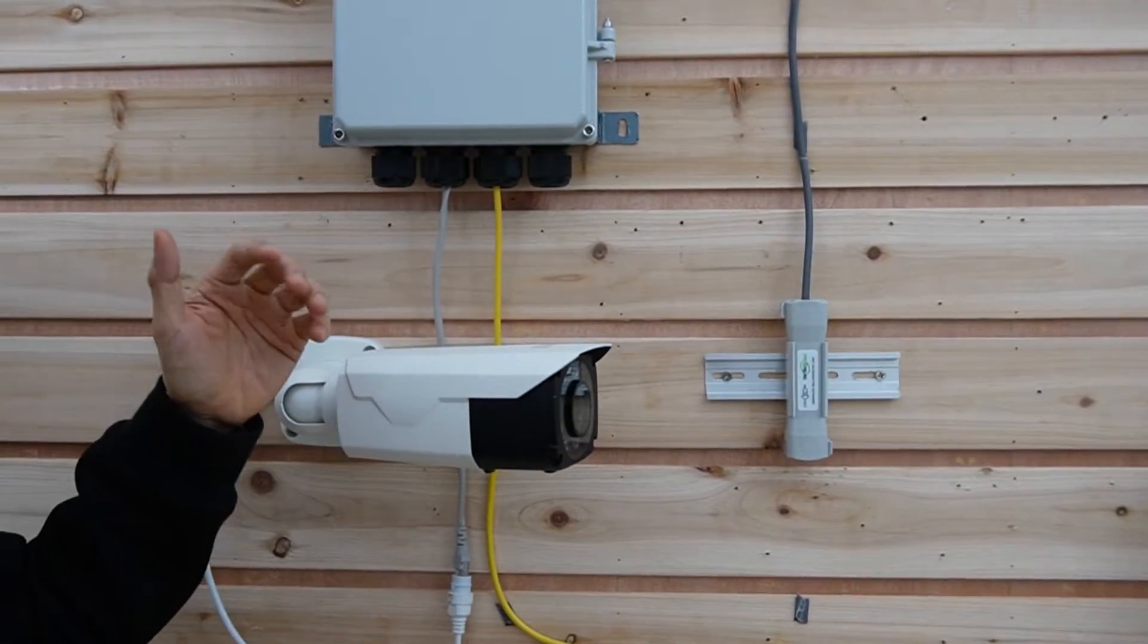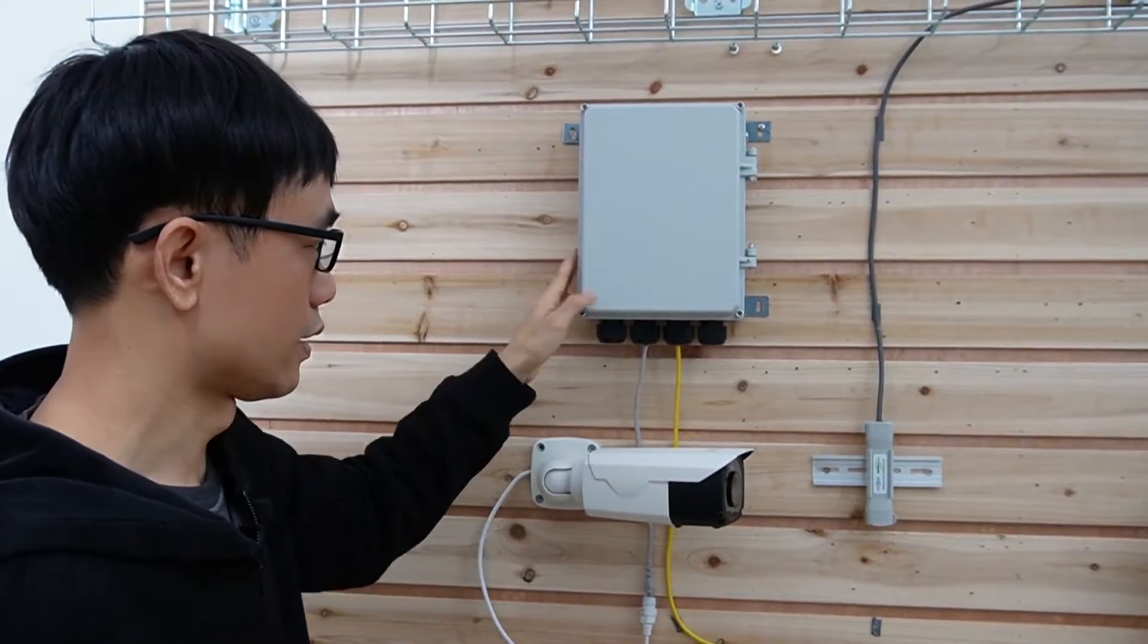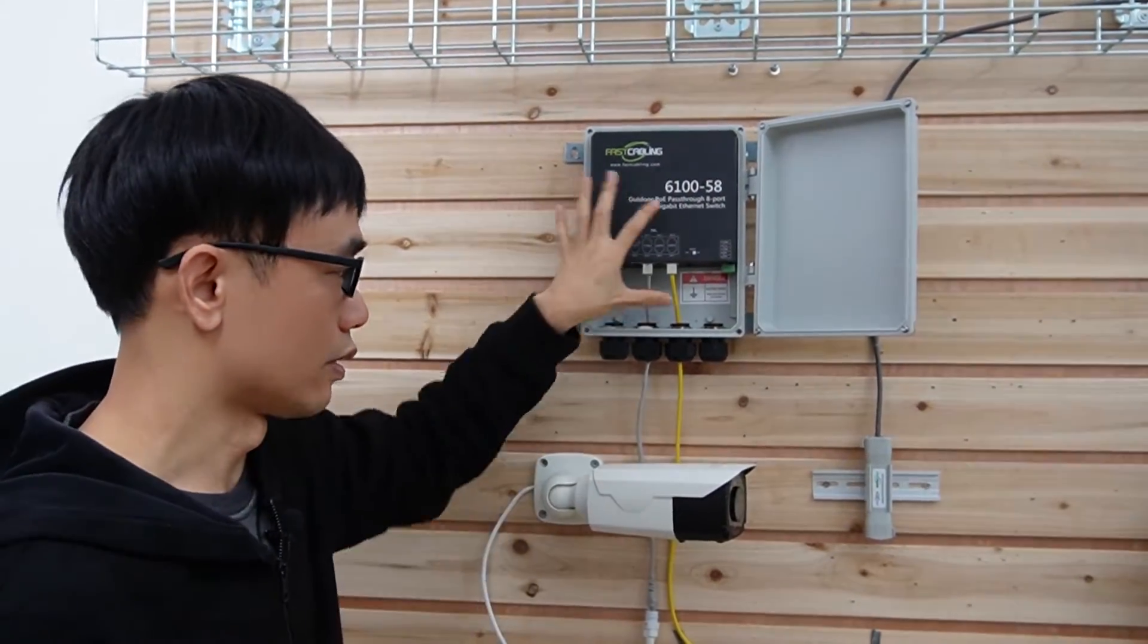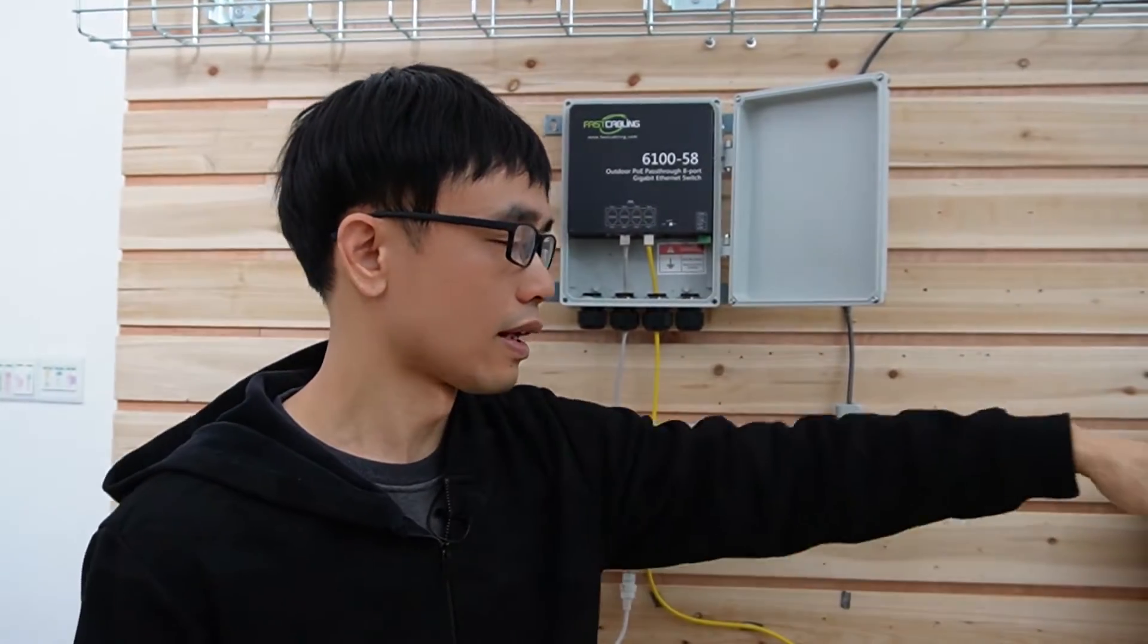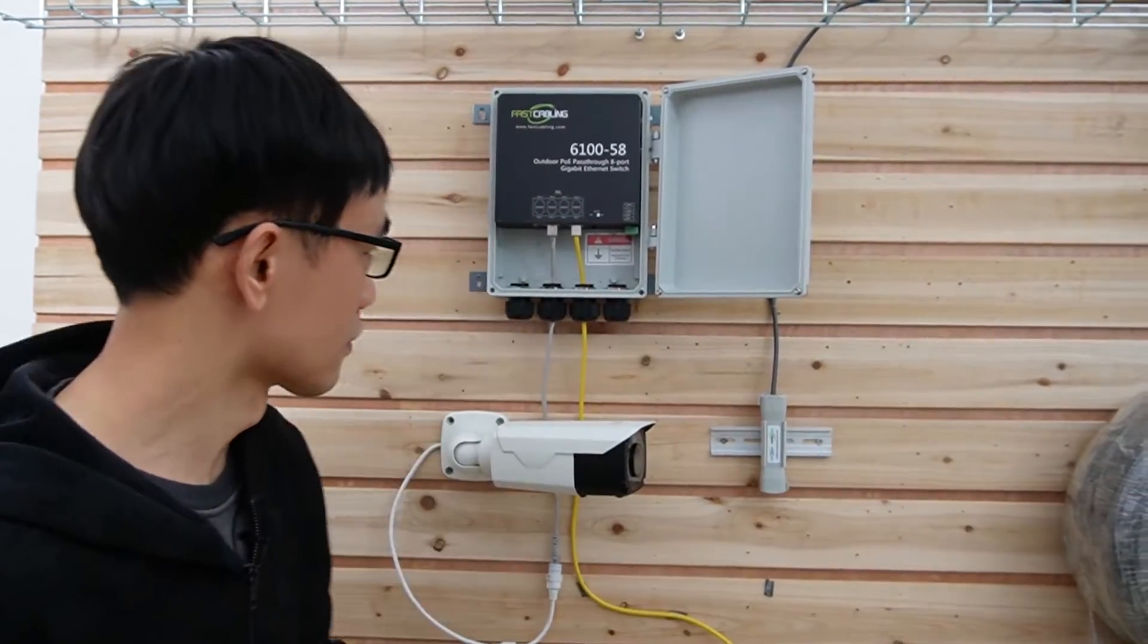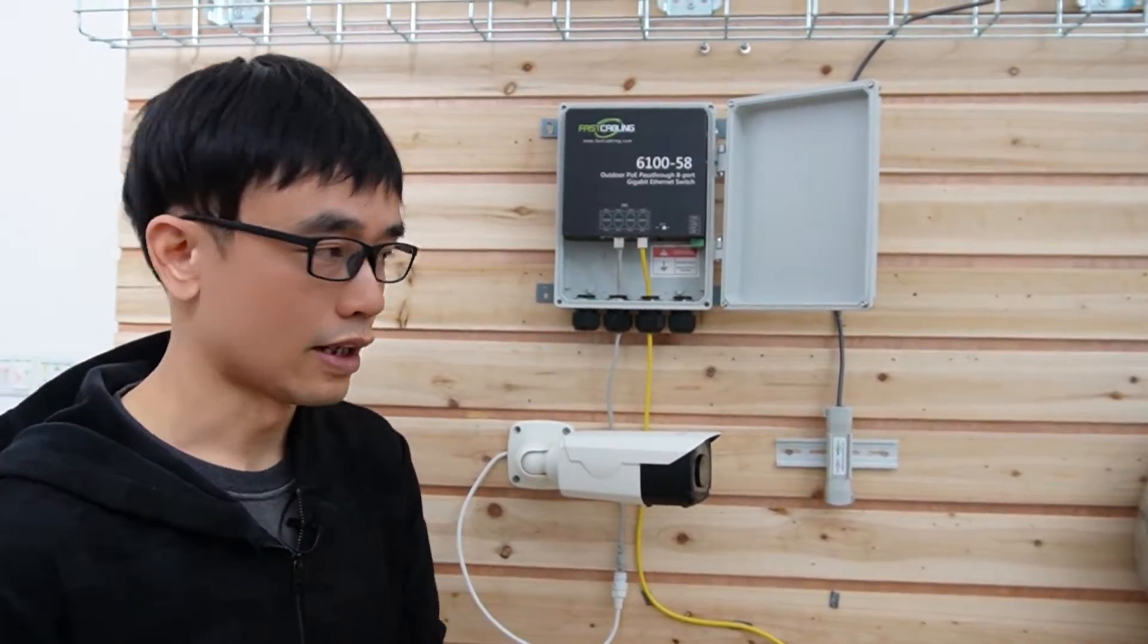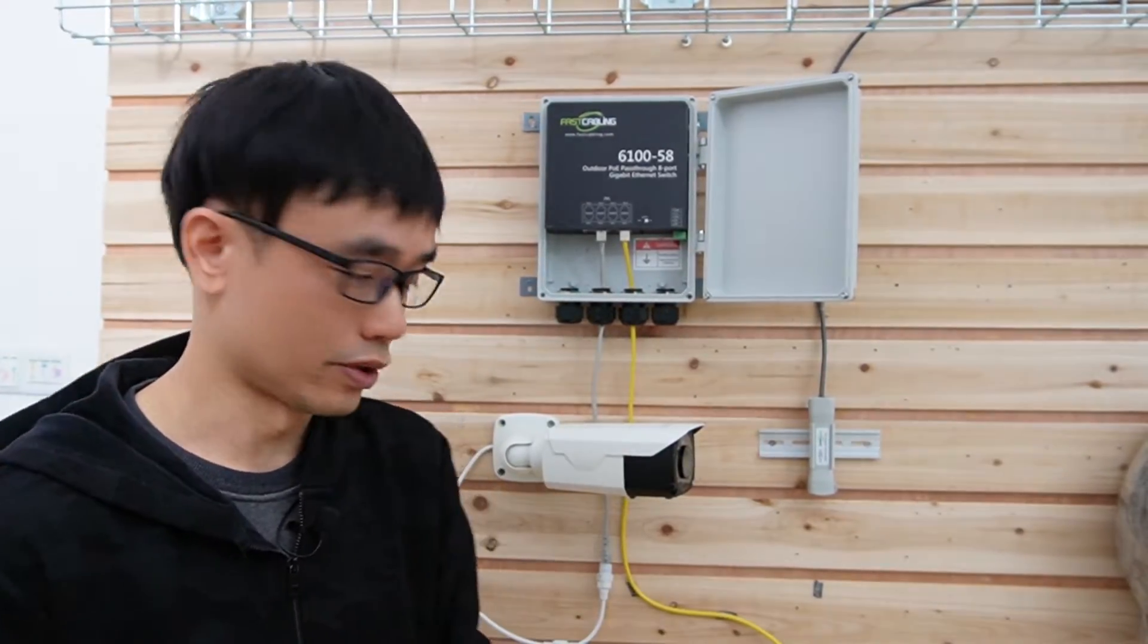As we have four cameras, so we need to have some kind of switch. This is the outdoor PoE switch to connect all the cameras to the switch. Then send all the video signal back to the network video recorder. There's one feature from this switch, it's the PoE power switch. It can get the power from another PoE injector or PoE switch.